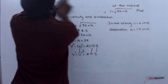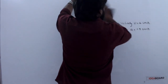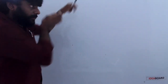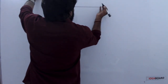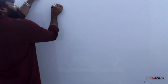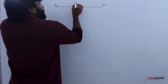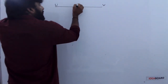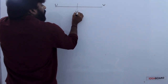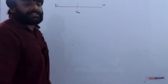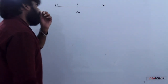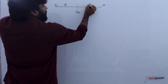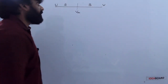Small application: One body with initial velocity u and final velocity v moves with constant acceleration. Required: midpoint velocity. The midpoint divides total displacement into two equal parts, each equal to s.